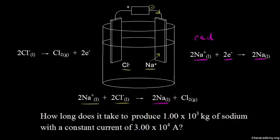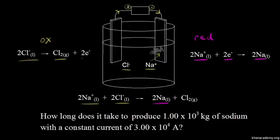Remember, reduction occurs at the cathode. We can draw liquid sodium metal forming on the electrode on the right — forming on the cathode. For the other half-reaction at our other electrode, our battery draws electrons away from this electrode, so oxidation is occurring here — this would be the anode. Liquid chloride anions are oxidized to chlorine gas; we lose two electrons. So chloride anions are oxidized to chlorine gas at the anode, and we'd have bubbles of chlorine gas forming at this electrode.